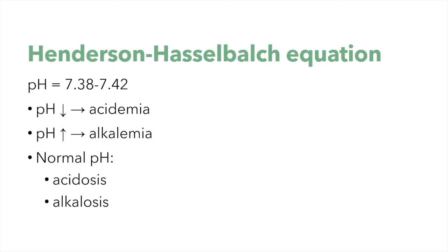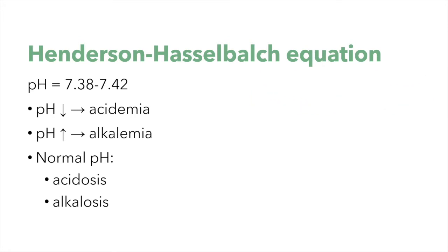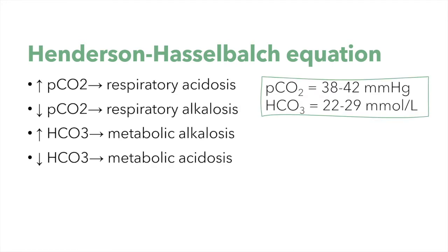As an introduction, you may know that there is an old way to interpret acid-base arrangements that is based on the Henderson-Hasselbalch equation — that equation to calculate the pH. If the pH decreases below the normal range we speak of acidemia; if the pH increases we speak of alkalemia. However, there can be acid-base arrangements even in the absence of a change in pH, and in such cases we instead speak of acidosis and alkalosis.